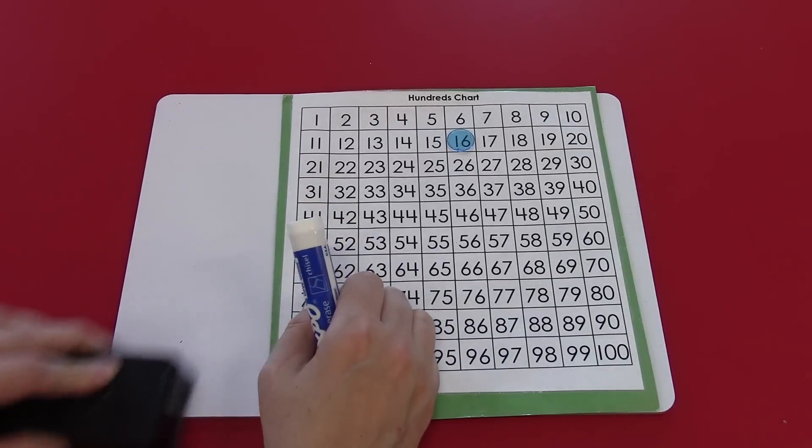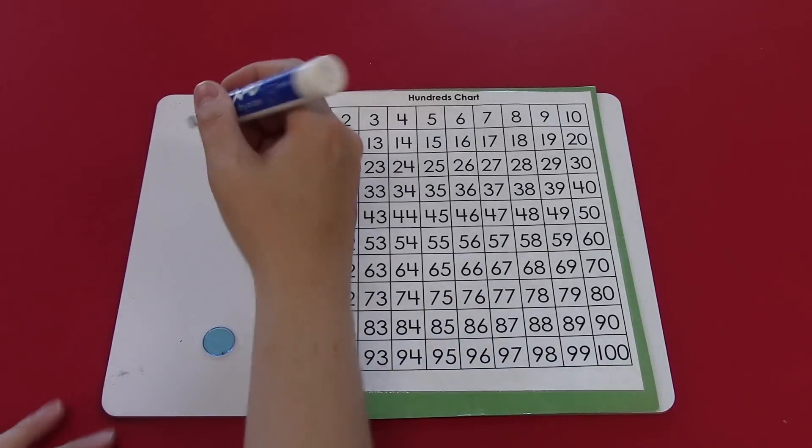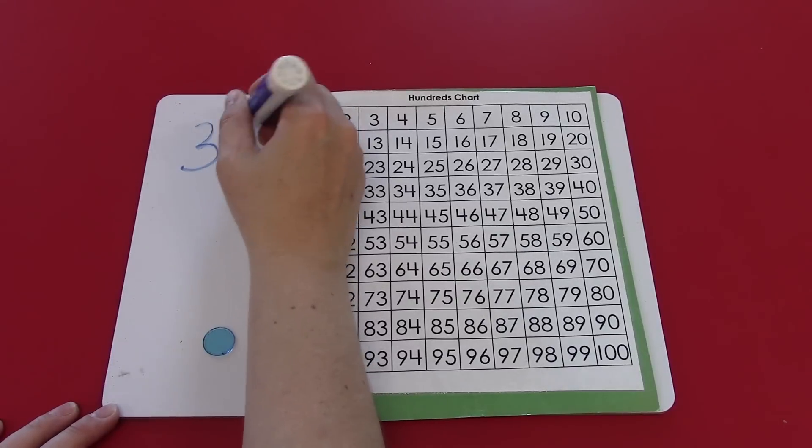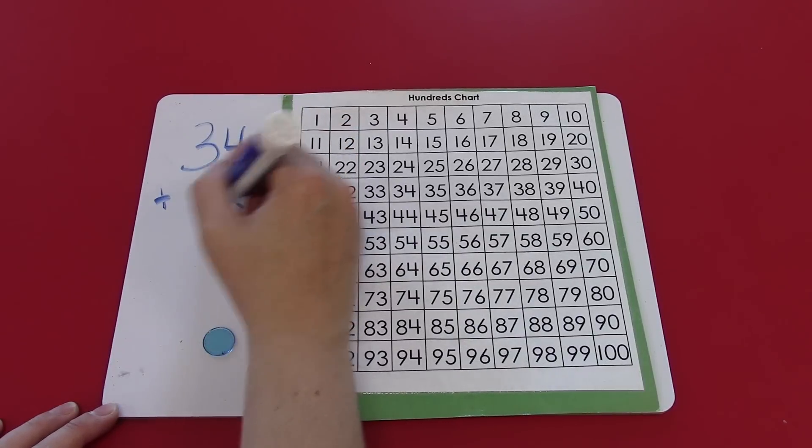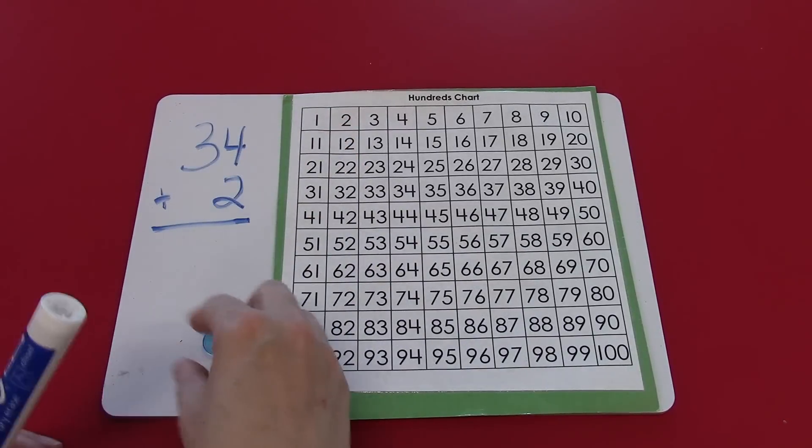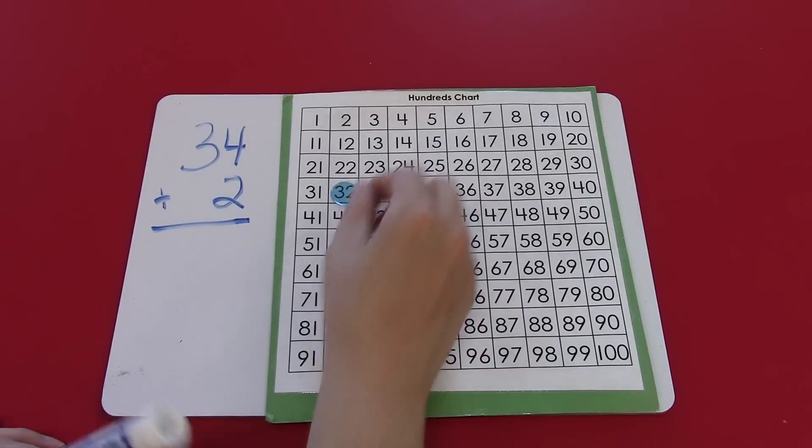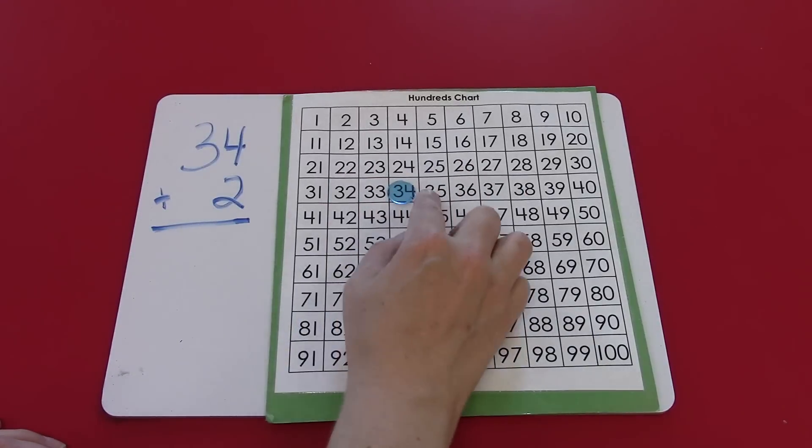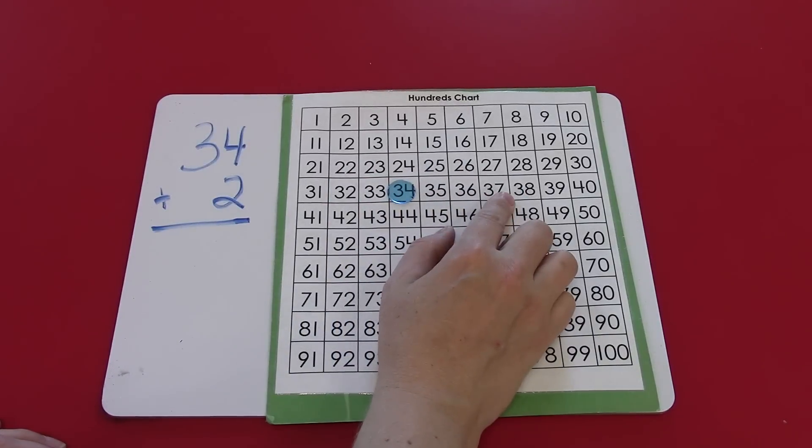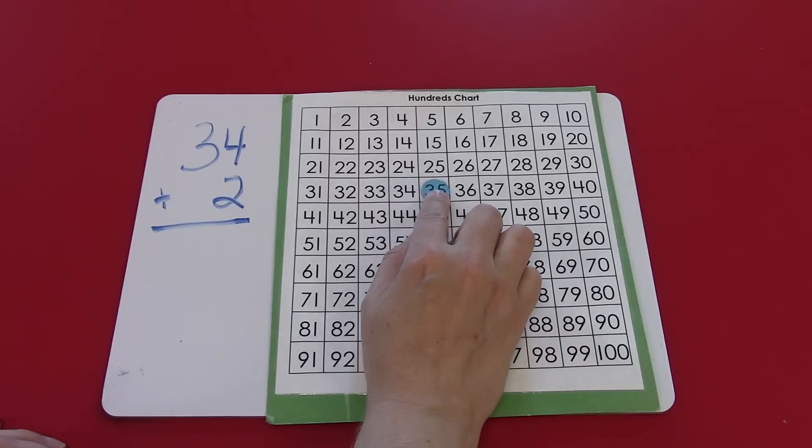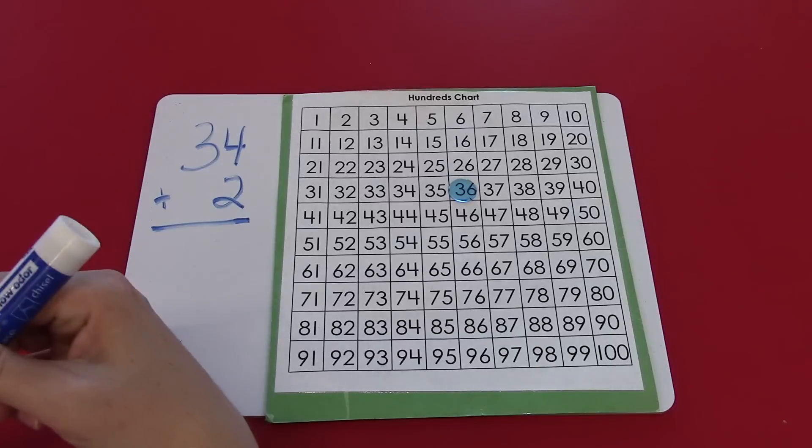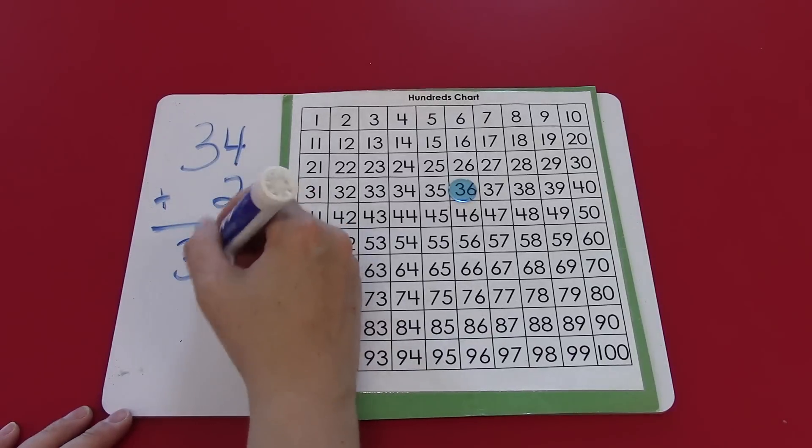Let's try another one. 34 plus 2. 34. And if I remember going to the right I'm going to be adding 1. So one, two. 34 plus 2 is 36.